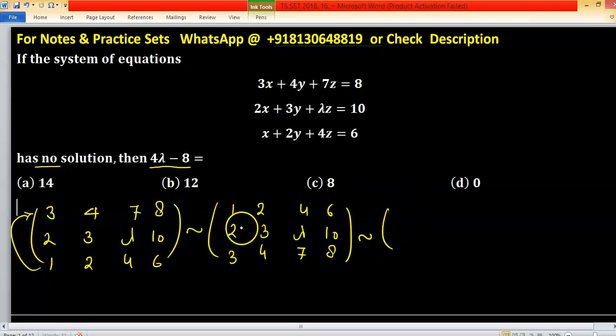Apply elementary row operations to make zeros under the 1. We get: first row 1, 2, 4, 6; second row 0, -1, lambda-8, -2; third row 0, -2, -5, -10.